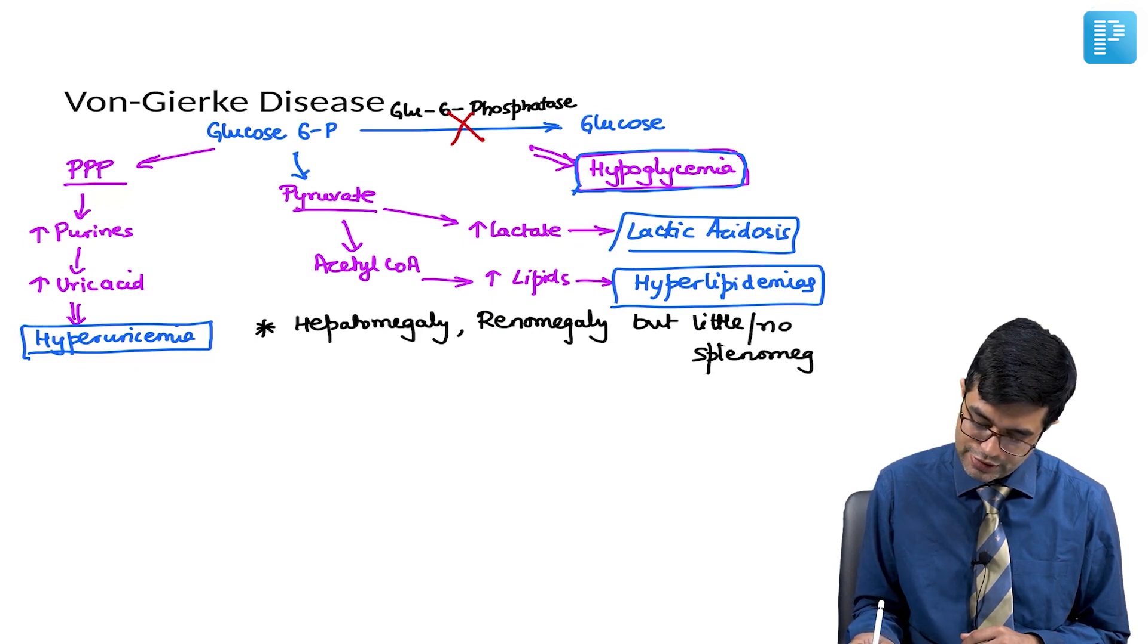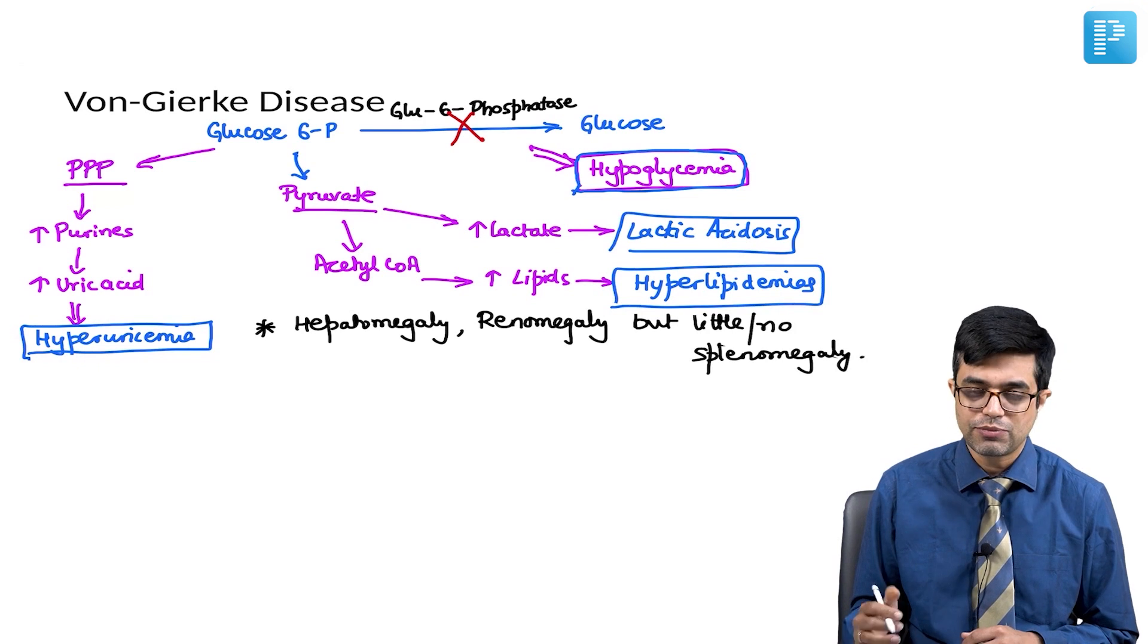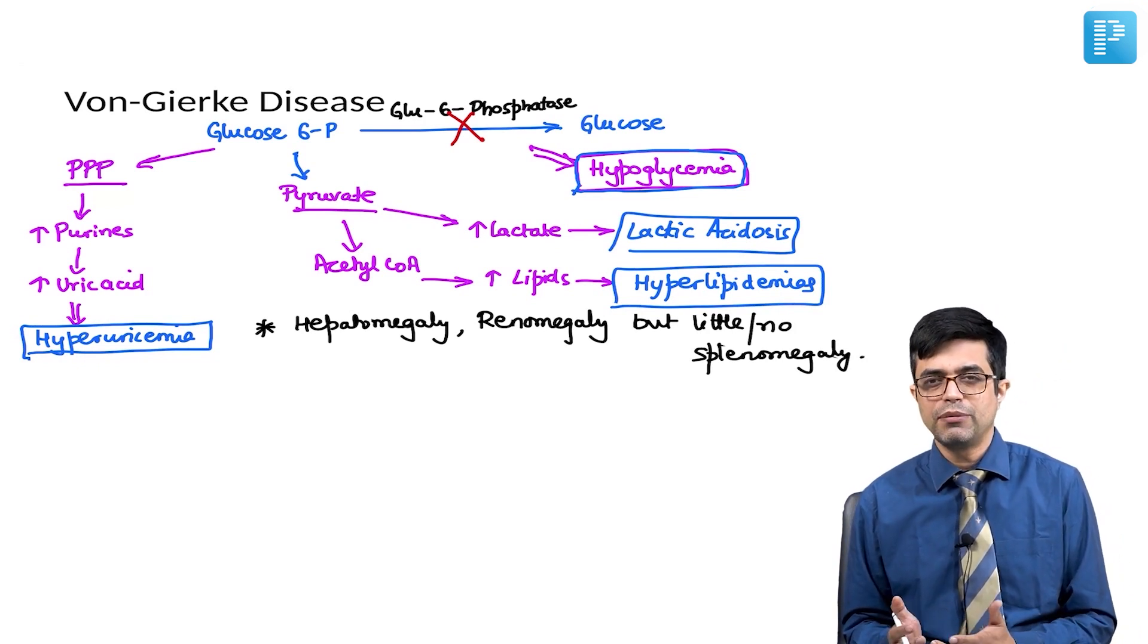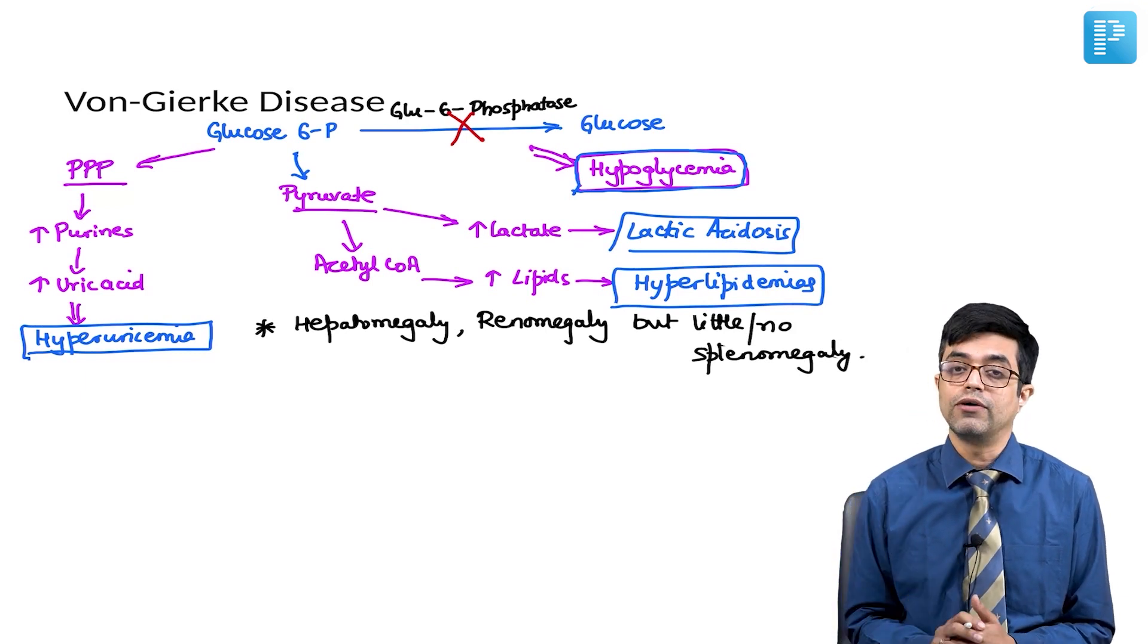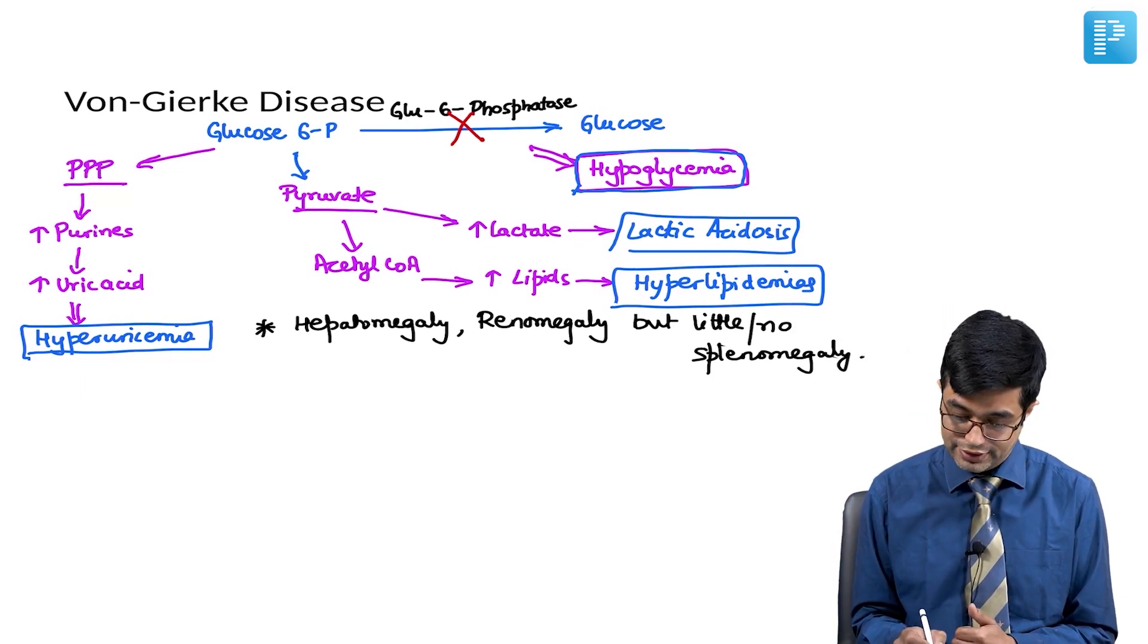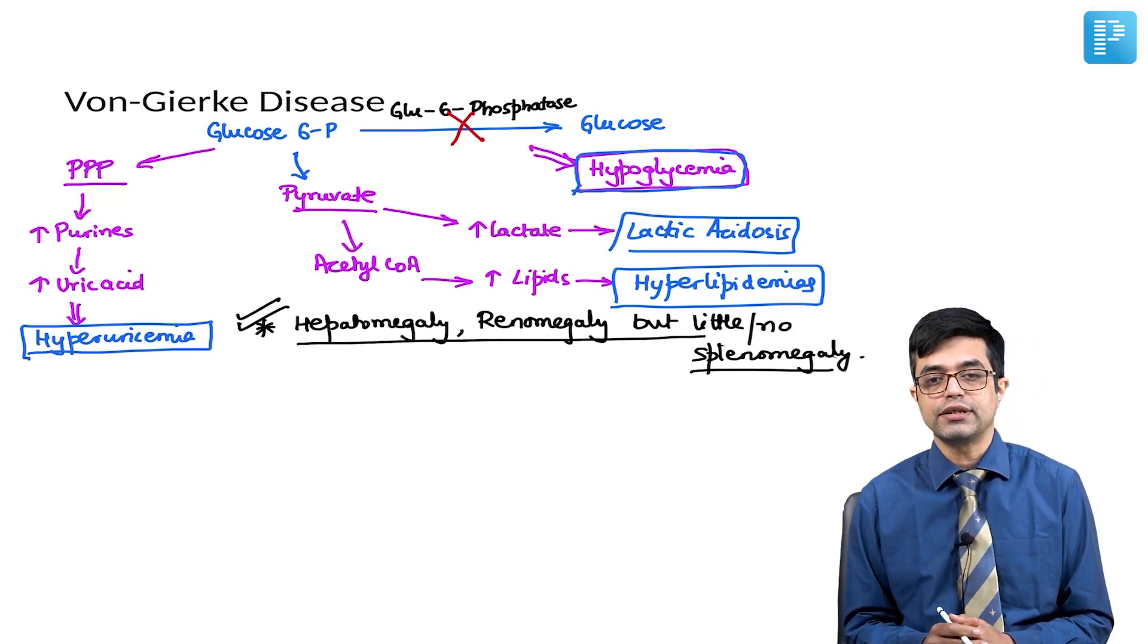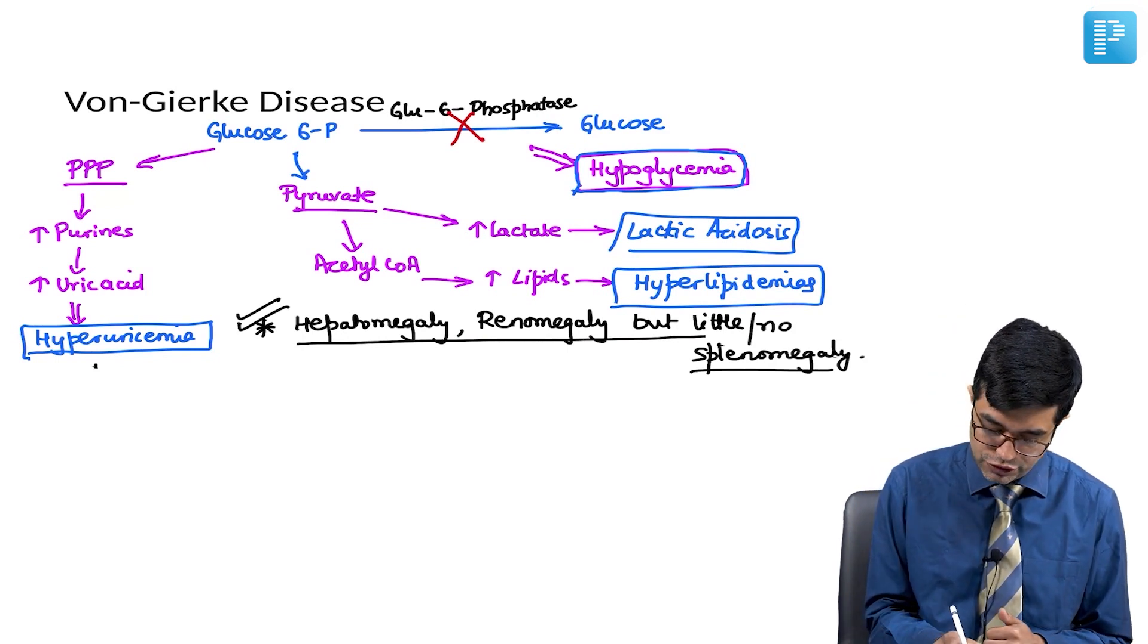So, if you have a patient with suspected GSD or suspected IEM, patient has massive splenomegaly with minimal hepatomegaly, minimal renomegaly, you will not think of Von-Gierke disease. This is a useful point which has been asked in MCQ entrance exams.